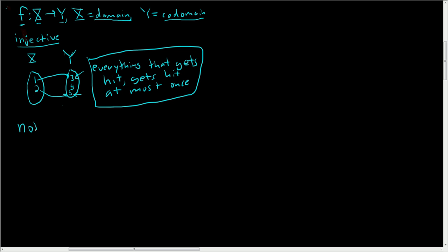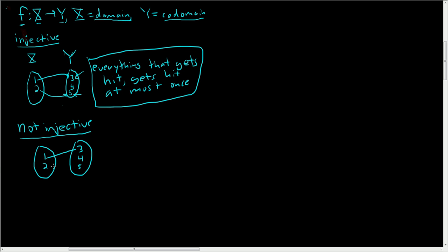So what does not injective look like? Not injective would maybe look like this: here's 1, here's 2, here's 3, 4, 5. And then 1 goes to 3, and 2 also goes to 3. So what got hit twice? 3 got hit twice. So injective means everything that does get hit gets hit at most once.